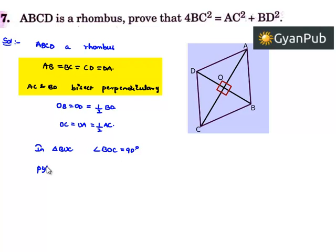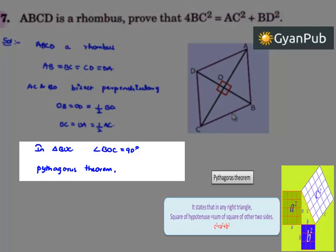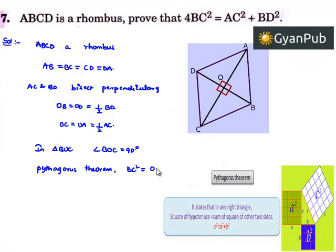Let us apply the Pythagoras theorem. By Pythagoras theorem, in a right-angled triangle, the hypotenuse squared equals the sum of the other two sides squared. That is, BC² = OB² + OC².